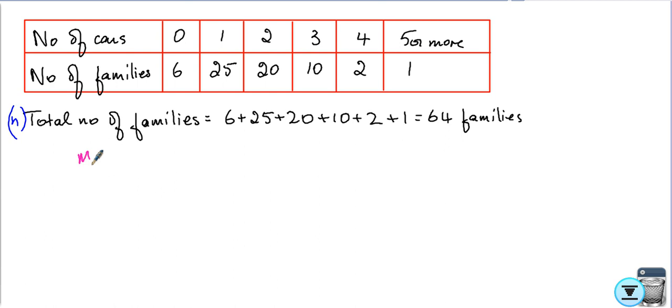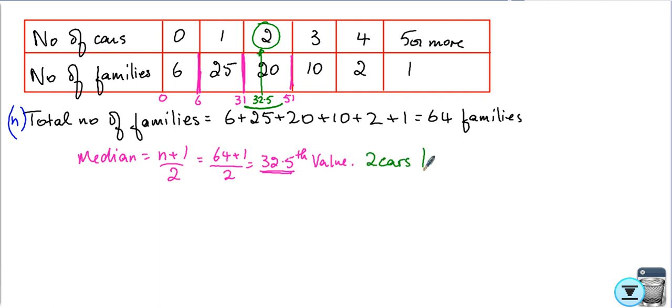So the median must lie at n plus 1 over 2. So it is 64 plus 1 over 2, which is the 32.5 value. Now we have to find that value. Starting from here it's 0, arriving up to here I have 6 zeros. 6 and 25 is 31. 31 and 20 is 51. We need the 32.5. As you can see, the 32.5 lies between 31 and 51. It lies between these two, so it's 2 cars. The median is 2 cars per family.